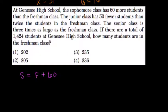The junior class has 50 fewer students than twice the students in the freshman class. So the junior class is equal to twice the freshman class minus 50.